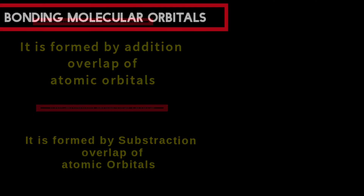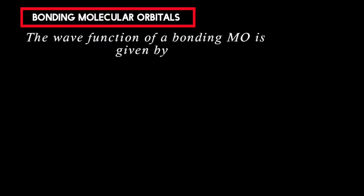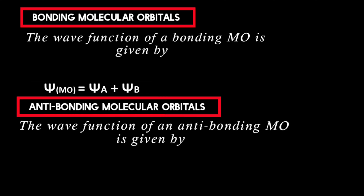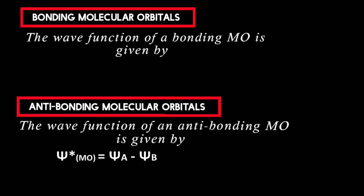Now let us consider the second difference. The wave function of the bonding molecular orbital is given by the equation: ψ(MO) = ψa + ψb, while the wave function of the anti-bonding molecular orbital is given by ψ* = ψa − ψb.